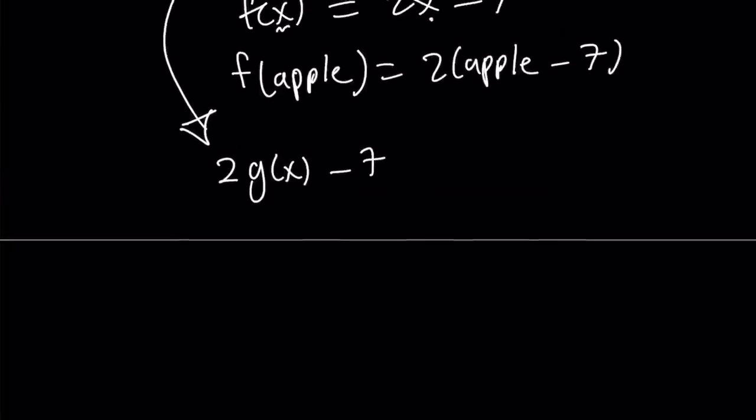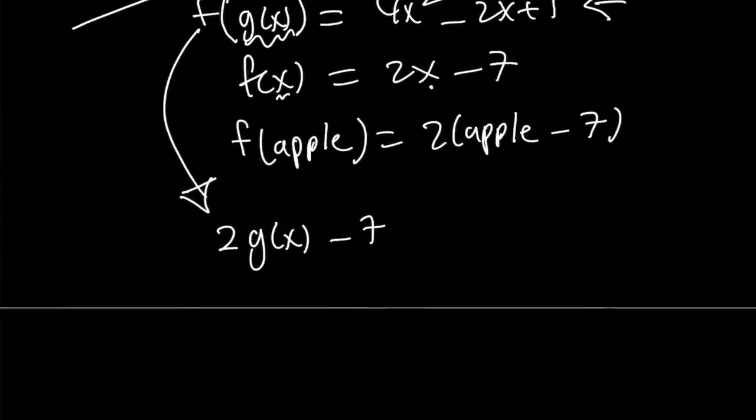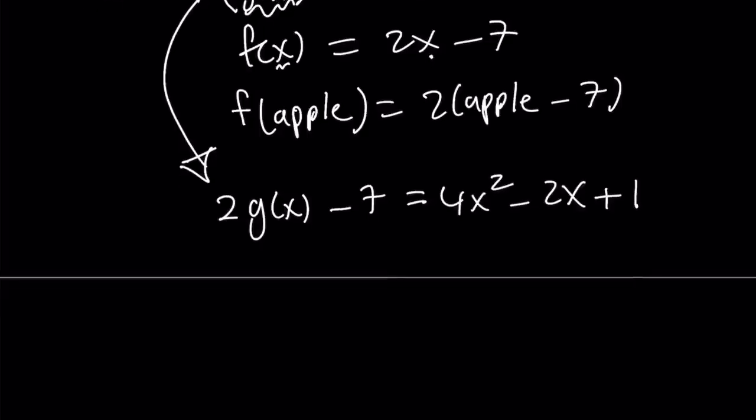So 2 times g(x) minus 7 is the same as f(g(x)), and we know that f(g(x)) is equal to 4x squared minus 2x plus 1. So from here we can find g(x), can't we?